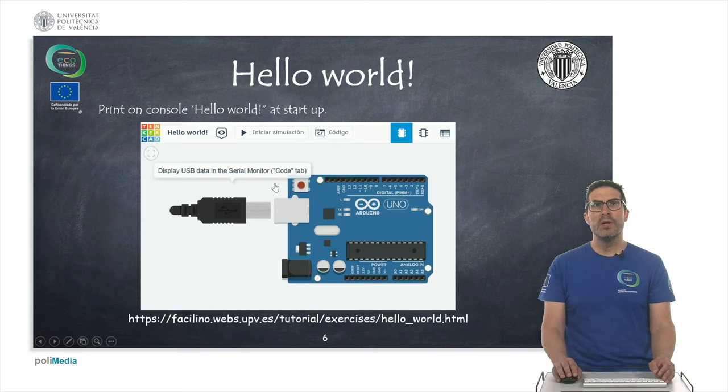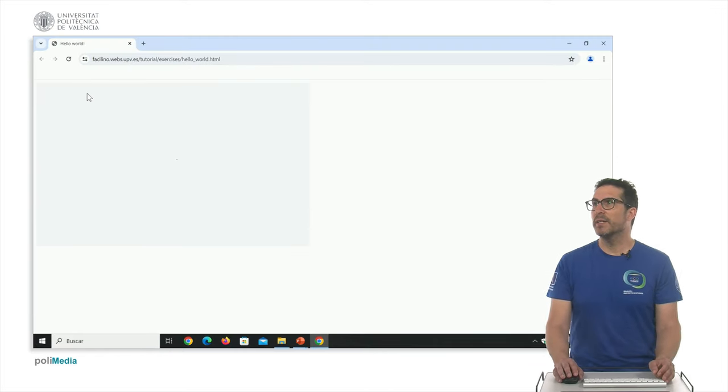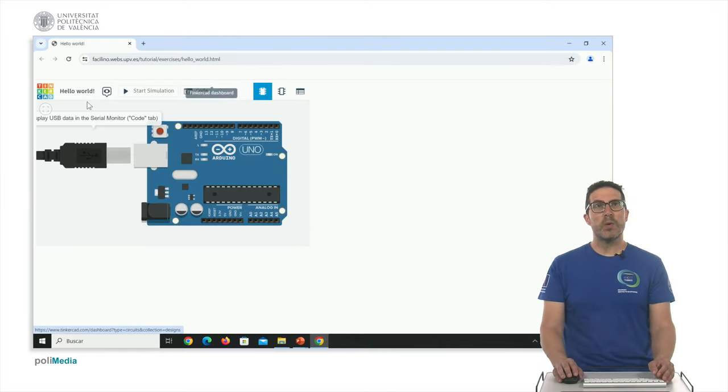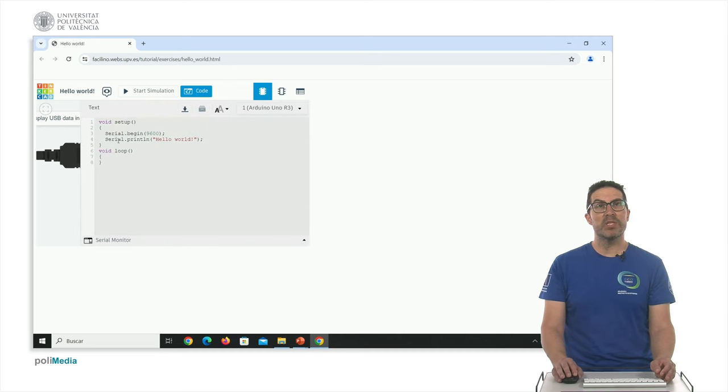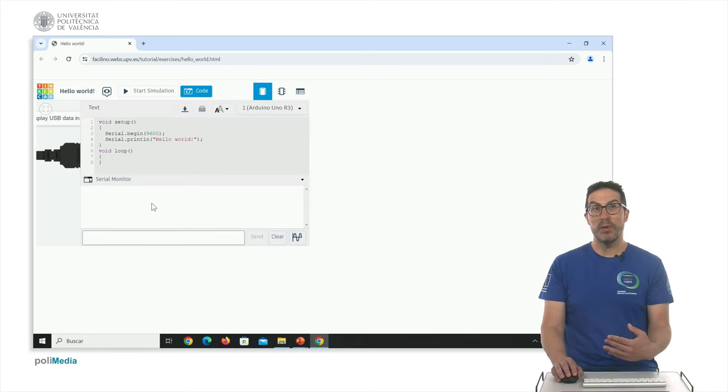Let me show the example using, in this case, a Tinkercad simulator, which is quite handy in order to show how it works. You can see that we have a tab code in which we have uploaded the code that Fazlino has generated. And we have also a serial monitor here, in which we can display all the data that is received, in this case, from the computer point of view.